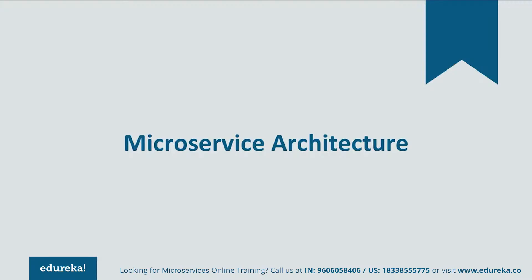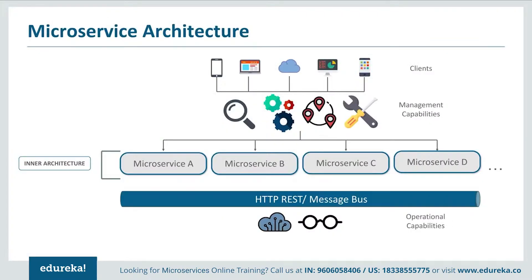Let's look at different components of the microservices architecture. The architecture starts with different clients from different devices trying to perform different management capabilities such as build, search, notification, and so on. Each functionality is segregated into separate microservices handling their own data — for example, microservice A takes care of search, microservice B handles build, microservice C handles notifications. All individual microservices have their own load balancing and execution environments. They communicate within themselves through REST or message bus for operational capabilities such as automation and monitoring. Client requests are passed to the internal architecture through an API gateway.